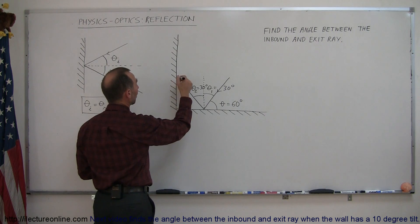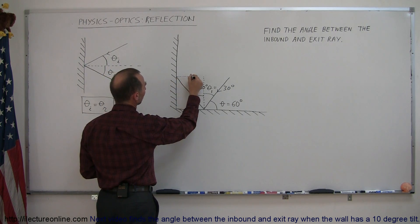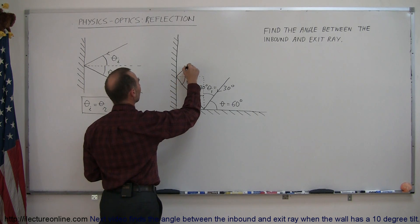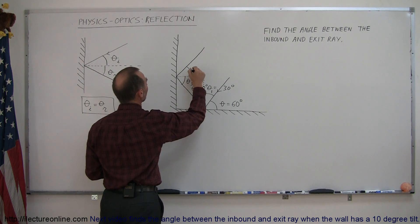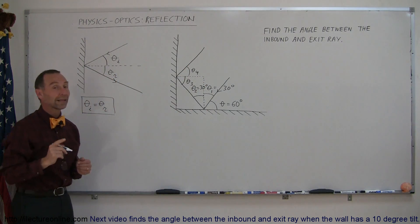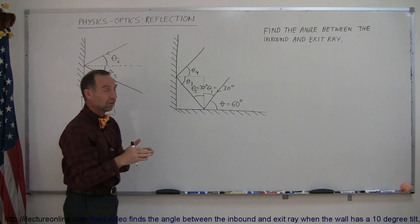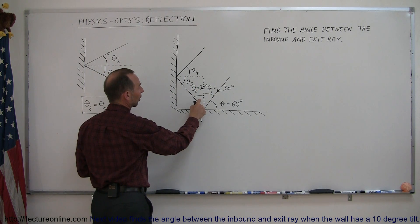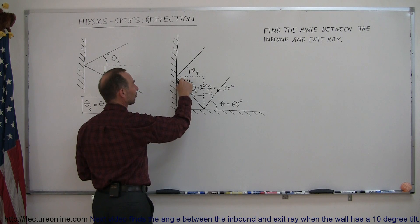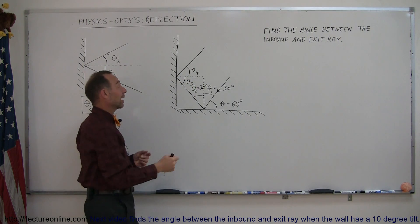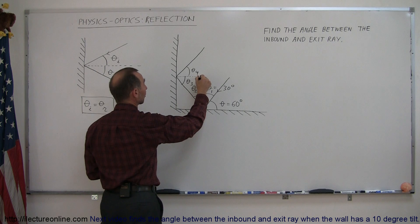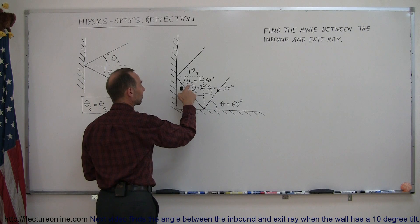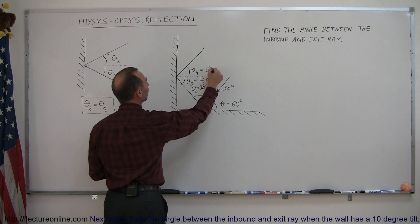At that point, since the ray hits the second wall, we draw a normal line there and define theta sub 3 as the incident angle at that surface. The ray then reflects in a new direction, and that angle is called theta sub 4. Because of reflection, theta sub 3 must equal theta sub 4. To find theta sub 3, we use the triangle formed: we know one angle is 30 degrees and another is 90 degrees, so the third must be 60 degrees, since all three must add up to 180 degrees. Therefore theta sub 3 is 60 degrees, and theta sub 4 must also be 60 degrees.